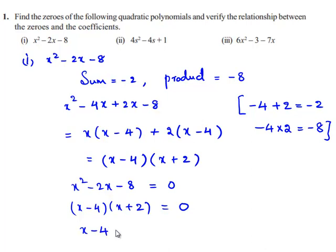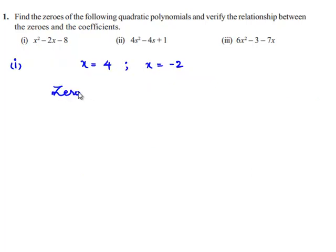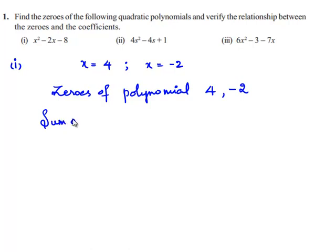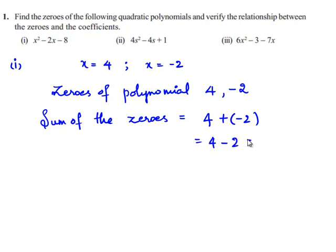We can say that x minus 4 is equal to 0 and x plus 2 is equal to 0. Transposing minus 4 to the right hand side, we get x is equal to 4, and transposing plus 2 to the right hand side, we get x is equal to minus 2. So the zeros of the given polynomial are 4 and minus 2, and the sum of the zeros is 4 plus minus 2, which is 4 minus 2, equal to 2.